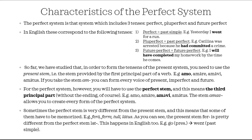The perfect stem is exactly the third principal part without the ending. So if I have amo, amare, amavi, amatus, the perfect stem comes from amavi. If we remove the ending, our stem will be 'amav,' and with the stem amav we can create every form of the perfect system. Something a little trickier about the perfect system is actually learning the perfect stem, because some of them have to be memorized — in some verbs they are very different from the present stem. That is why it is important to study vocabulary and learn the principal parts of a verb.